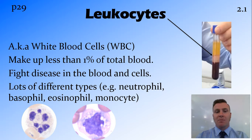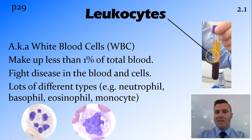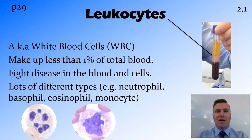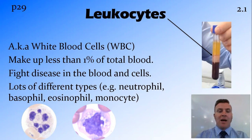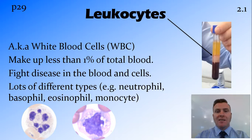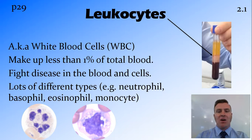Leukocytes are the white blood cells. The white blood cells are actually sitting in a very thin layer on top of that gel, referred to as a buffy coat. That buffy coat is less than 1% of the total amount of blood, most of that being the leukocytes. There are multiple different types of white blood cells — neutrophils, basophils, eosinophils, monocytes, macrophages — and all of them are involved in attacking disease within the body. At this stage, if you know that leukocytes are the white blood cells and they fight disease, we're good to go.